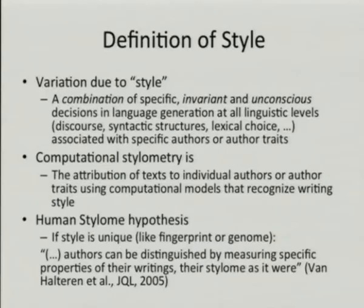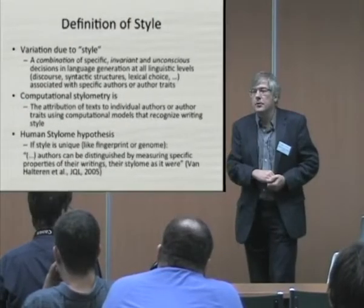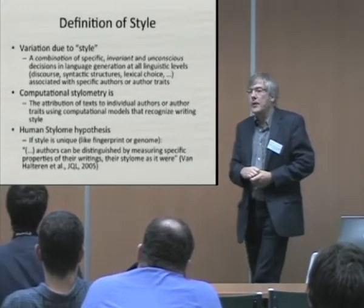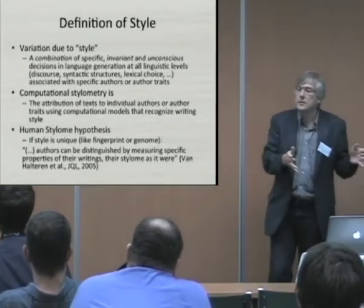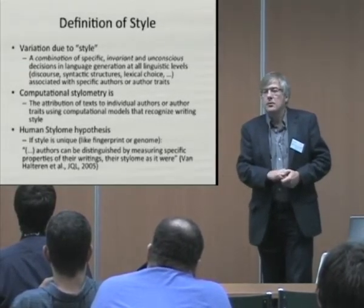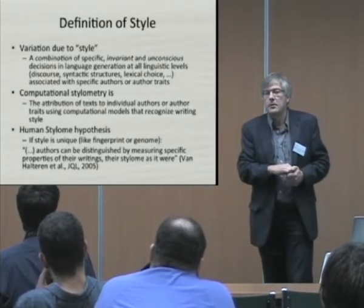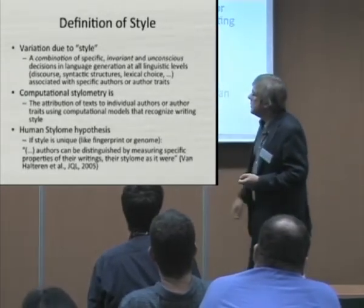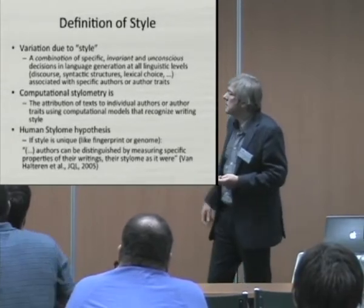Variation due to style is defined as a combination of specific, invariant and unconscious decisions in language generation at all linguistic levels associated with specific authors or author attributes like being male or female, being schizophrenic, being introverted, etc. It should be invariant because otherwise a classifier trained now would not be able to classify correctly a few years later. It should be unconscious, otherwise it's possible to fake the style of other authors. That's also a sub-area that is only just starting — it's called adversarial stylometry: can you find classifiers which are robust against people trying to imitate the style of others?